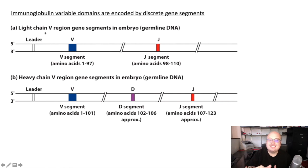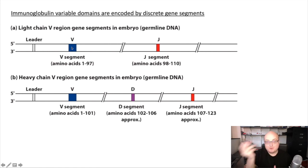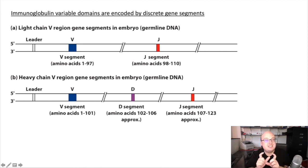Variable light chains are composed of a V-segment and a J-segment, whereas the heavy chain variable region is composed of a V-segment, a D- or diversity segment, as well as a J-segment. We have many different types of V-segments that can be combined with all the different types of J-segments we have, and those combinations together make a unique light chain variable region. For the heavy chain, we combine one V with one D with one J to get a unique combination.